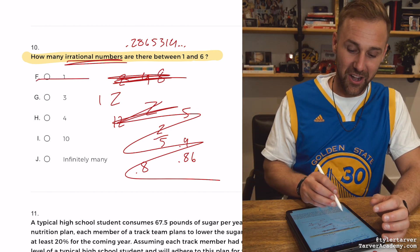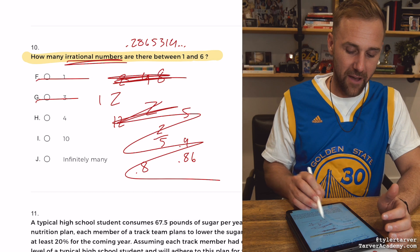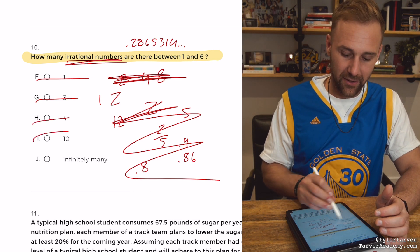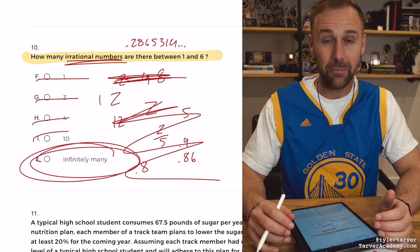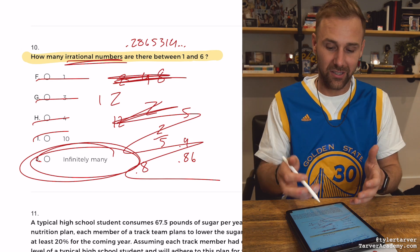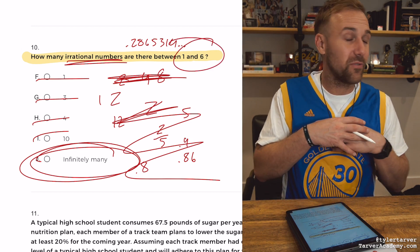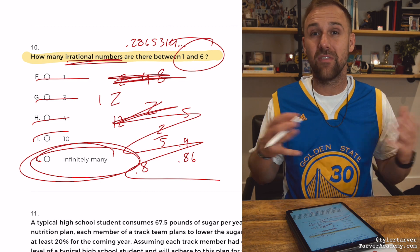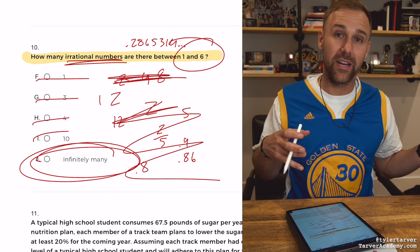So it's not one, not three, not four, not ten. It's infinitely many because between even just one and two, much less one and six, you can go as far as you want in the decimals because there's an infinite number of numbers below a decimal.